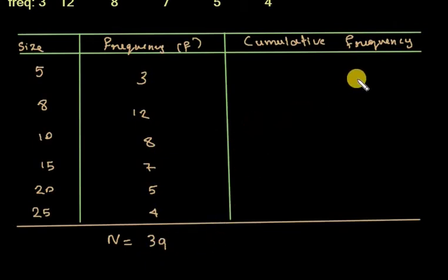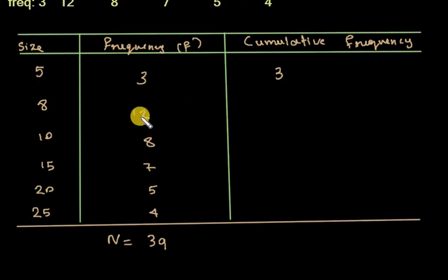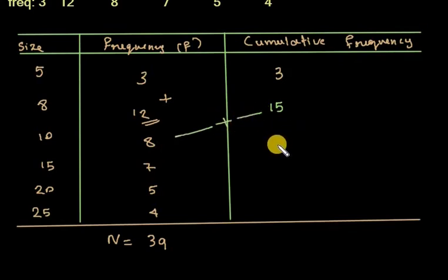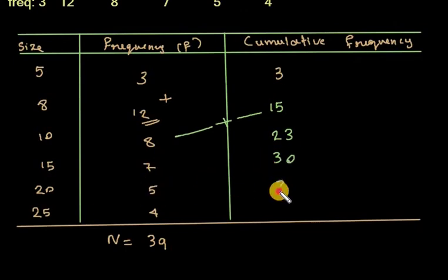Now we calculate cumulative frequencies. The first CF is 3. Next: 3 + 12 = 15. Then: 15 + 8 = 23. Next: 23 + 7 = 30. Then: 30 + 5 = 35. Finally: 35 + 4 = 39. So the cumulative frequencies are 3, 15, 23, 30, 35, 39.